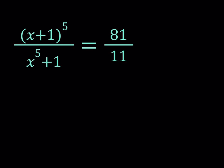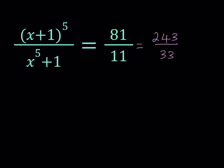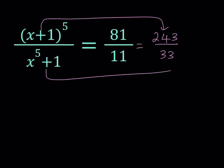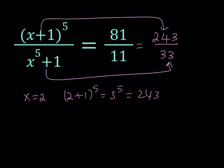I'm going to be using a trick here. Let's go ahead and multiply the numerator and the denominator of this fraction by 3. You'll see why I'm doing this in a little bit. By doing that I actually found something pretty interesting. If you compare the numerators to the numerators and the denominators to the denominators, you're going to notice that x equals 2 is a solution. Because 2 plus 1 is 3, and 2 plus 1 to the 5th power is equal to 3 to the 5th power, which equals 243. So x equals 2 is a solution of this equation.